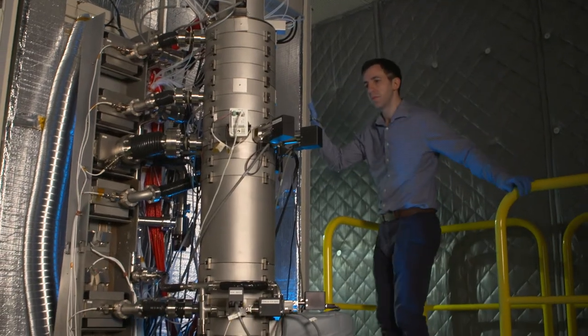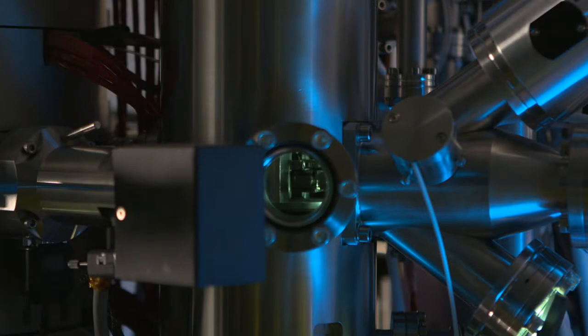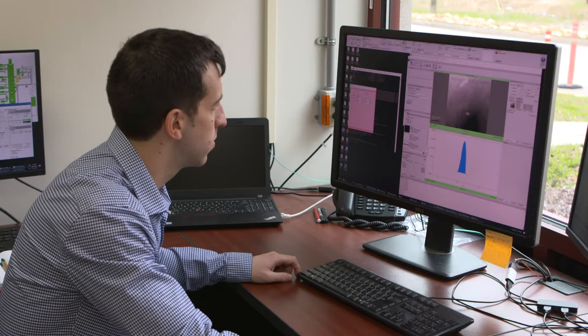I mainly specialize in monochromation aberration-corrected scanning transmission electron microscopy, and specifically electron energy loss spectroscopy. I use this to study a variety of materials. We look at phonons, we look at plasmons, we look at molecular vibrations, we look at band gaps, optical properties, and electronic structure in quantum materials, organic materials, and energy materials.